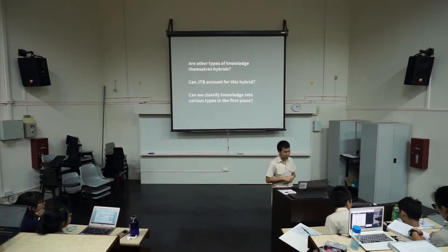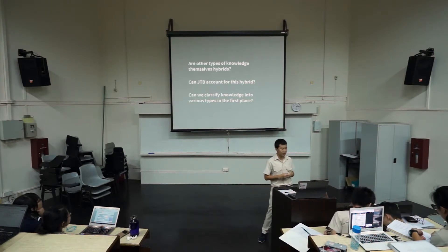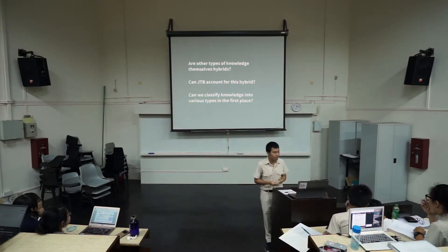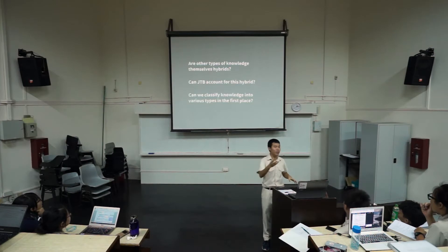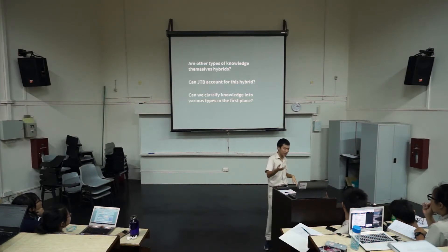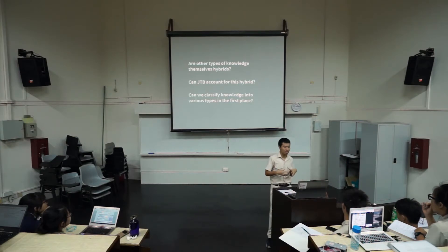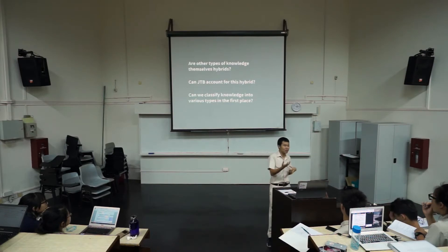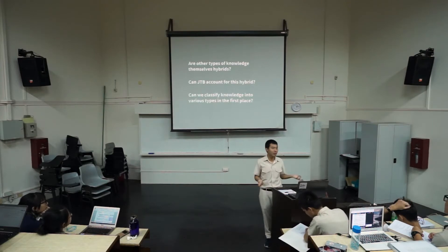The problem is that there are external implications as well. Are other areas themselves hybrids? Can JTB account for this hybrid knowledge? Individually, for science and history, JTB can account for each — though not even fully for art, because truth becomes a problem in art. Especially when you mix everything together, we do get knowledge, but can JTB account for this hybridized knowledge? And can we even classify knowledge into various types in the first place? That would be another extension of this.